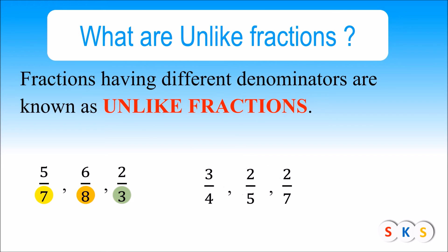Here we have more three fractions: 3 upon 4, 2 upon 5, and 2 upon 7, and you can see that the denominators of all three fractions are different. Hence 3 upon 4, 2 upon 5, and 2 upon 7 are unlike fractions.